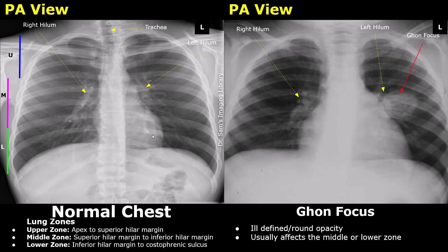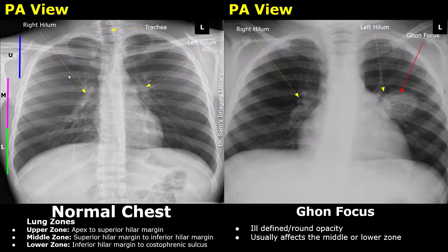On the left is a normal chest X-ray image in PA view. On radiography, we can divide each lung into three zones: upper, middle, and lower. The upper zone is from the lung's apex to the upper margin of the hilum. This is the hilum, where structures like bronchi, pulmonary arteries, pulmonary veins, nerves, and lymphatics enter and exit, connecting the lung to the heart and trachea. The hilum has a high density, bright, tubular and irregular shape on radiography. The middle zone is from the superior hilum margin to the inferior hilum margin, down to the costophrenic sulcus.